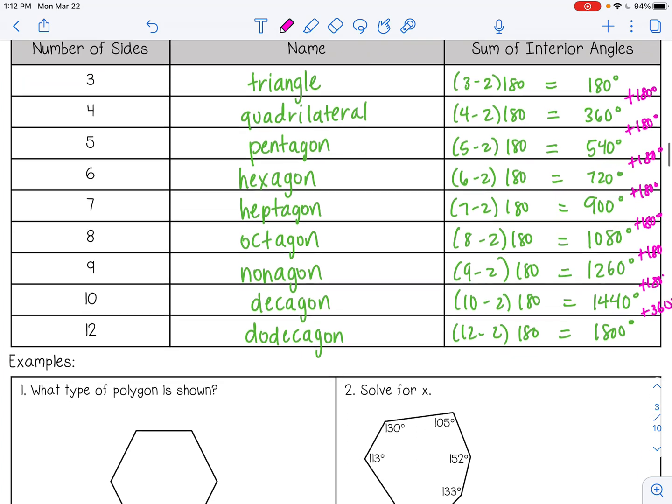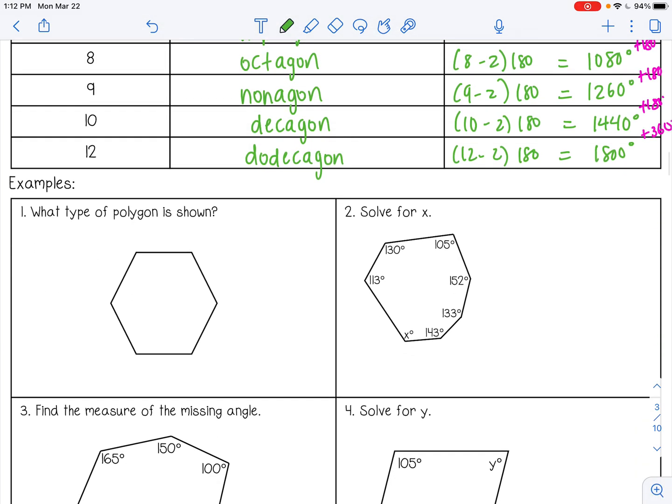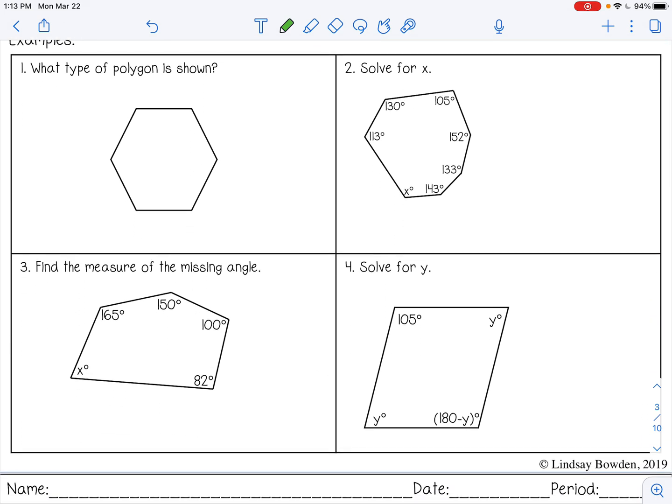Okay, let's go ahead and work on these examples below. Give me a second to finish the chart if you need it. As always, pause the video if you need a second to catch up. Okay, number one, what type of polygon is shown? This has one, two, three, four, five, six sides. So this is a hexagon.